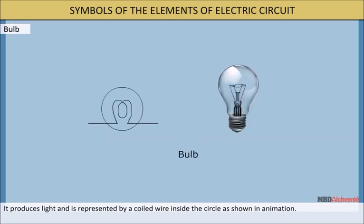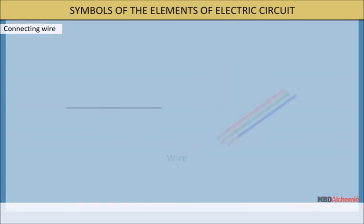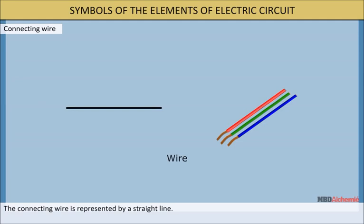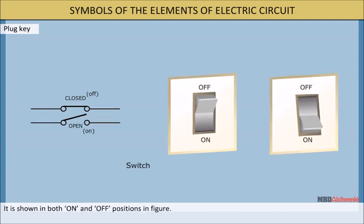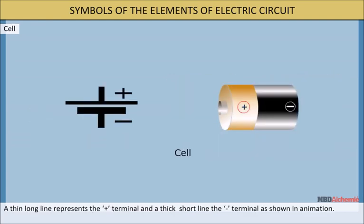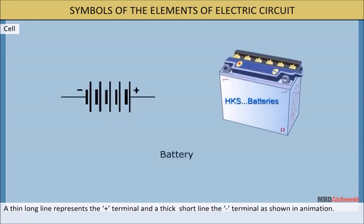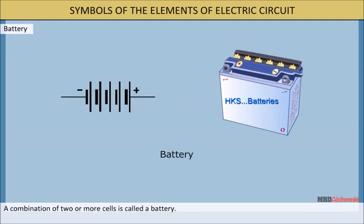A bulb produces light and is represented by a coiled wire inside a circle as shown. The connecting wire is represented by a straight line; it is usually made of copper and provided with insulation. A plug key is an electric switch and is shown in both on and off positions in the figure. In a cell symbol, a thin long line represents the positive terminal and a thick short line the negative terminal. A combination of two or more cells is called a battery, and its symbol is also a combination of cell symbols as shown.